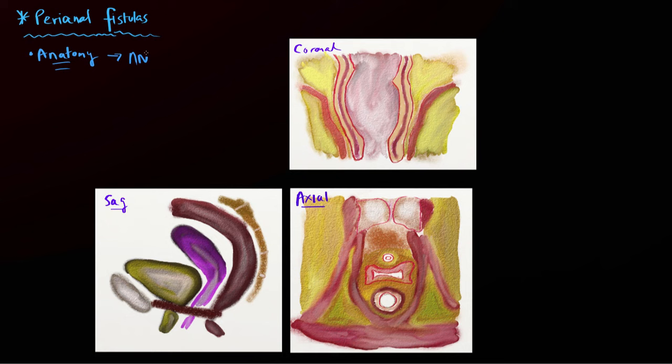When we talk about anatomy, we're really focusing on the anus. The anus is really the distal-most portion of the large bowel, and it ranges anywhere from about three to five centimeters in length. We define it from an anatomic and surgical perspective as that portion of the bowel below the level of the puborectalis muscle. We can see the puborectalis muscle coming from the pubic symphysis bone going all the way around and slinging over the posterior portion of the bowel.